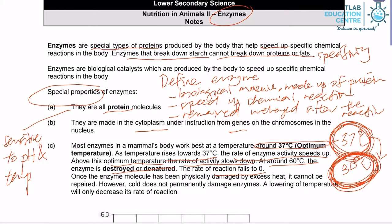So if I can draw a graph, the graph would look something like this: slowly goes up, reaches optimum temperature at this point, then subsequently it will fall, and this zero here is 60 degrees Celsius.